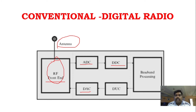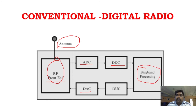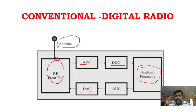Digital down conversion and digital up conversion are used mostly in modulation techniques. On the transmitting side we have modulation, and on the receiving side we have demodulation. Then there is a separate process called baseband processing, which is very important to understand for SDR. All processing — frequency hopping, conversions, encoding, decoding — is done in the baseband processing.